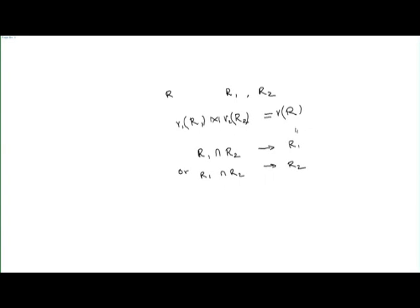When we do this join, it will give us back the original relation for any relation state which satisfies the given functional dependencies — based on which we checked that the common attributes functionally determine either all of R1 or all of R2. The decomposition will be lossless.